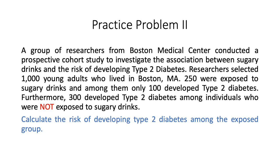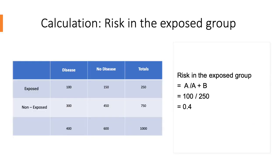This is the second practice problem, in which we will calculate the risk of developing type 2 diabetes among the exposed group. Risk in the exposed group is calculated as A divided by A plus B. 100 represents the A group — individuals who are exposed and develop the illness — and A plus B represents the whole exposed group, those who drink sugary drinks. When we do those calculations, we get 0.4. Individuals who drink sugary drinks have a 0.4 risk of developing type 2 diabetes.